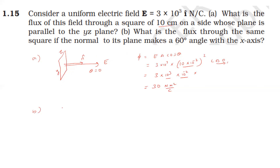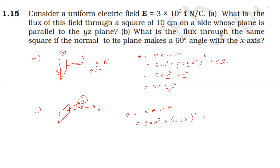For the second case, the normal to the plane makes 60° with the x-axis, so the angle between the area vector and the electric field is 60°. Flux = EA cos 60° = 3×10³ × 10⁻² × ½ = 30 × ½ = 15 N·m²/C. The unit of electric flux is N·m²/C.